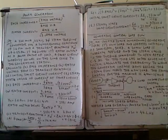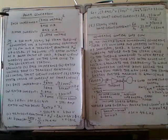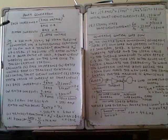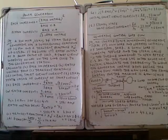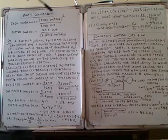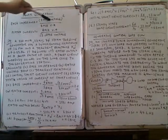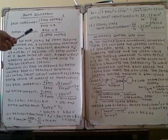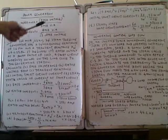For power generation, the base impedance can be calculated using the formula: base voltage squared divided by base MVA. The rated current is the base voltage divided by root 3 times base voltage.